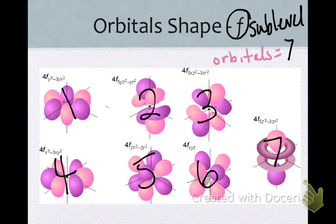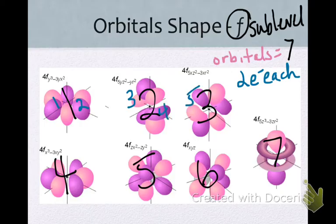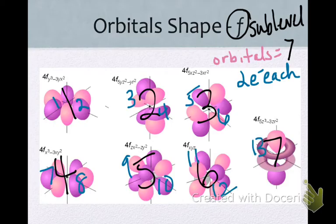Now, let's think about the Pauli exclusion principle. How many electrons can each orbital hold? Each orbital can hold two electrons each. So I can put one, two, three, four, five, six, seven, eight, nine, 10, 11, 12, 13, 14 total electrons that the F sublevel can hold.